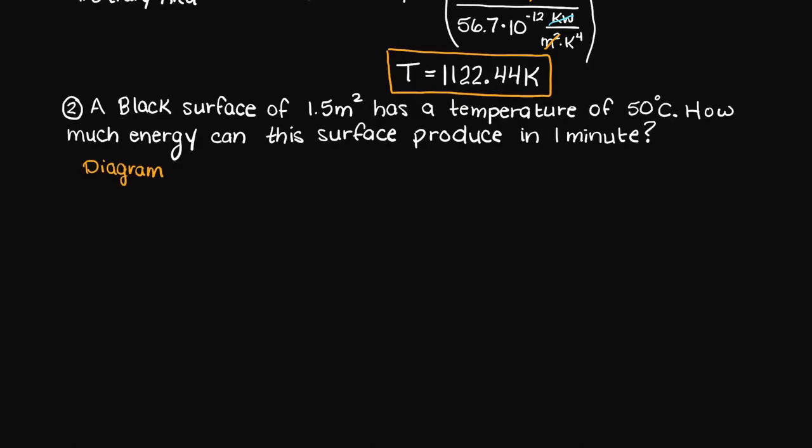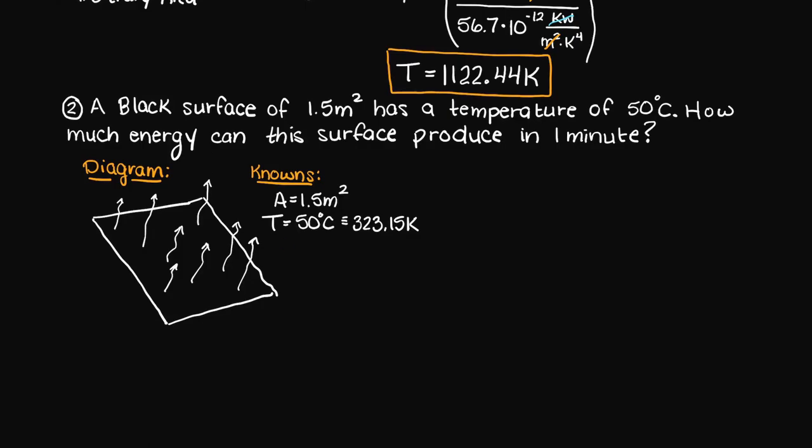Please take a minute now and try to solve this problem on your own. Alright, so let's begin solving this problem. We create our diagram which is just our simple black body surface, and then we list down our known values. We know the area of the black body, and we know its temperature, which remember must be converted to Kelvin.